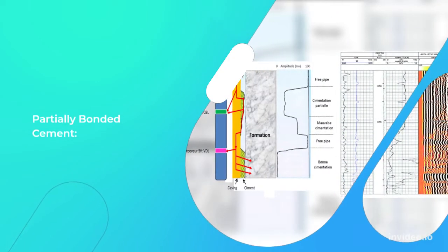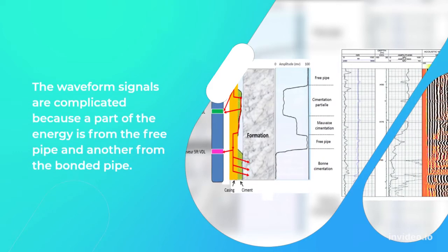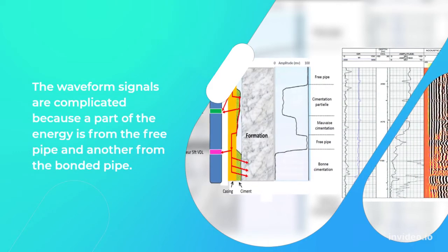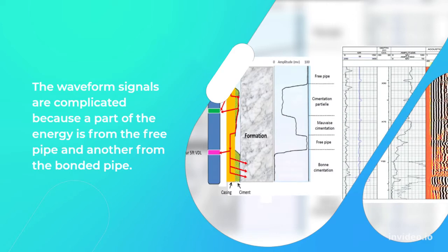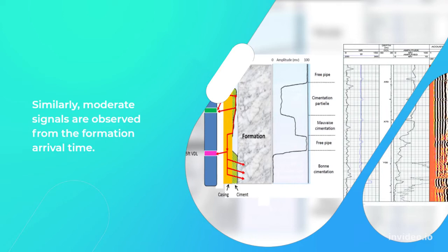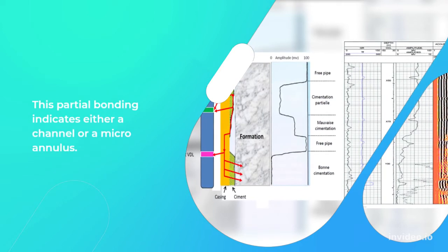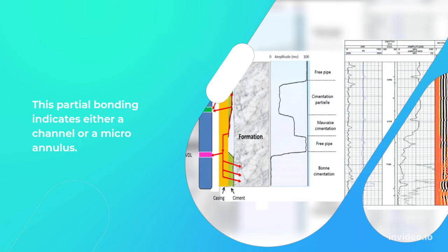Partially bonded cement: The waveform signals are complicated because a part of the energy is from the free pipe and another from the bonded pipe. Similarly, moderate signals are observed from the formation arrival time. This partial bonding indicates either a channel or a micro annulus.